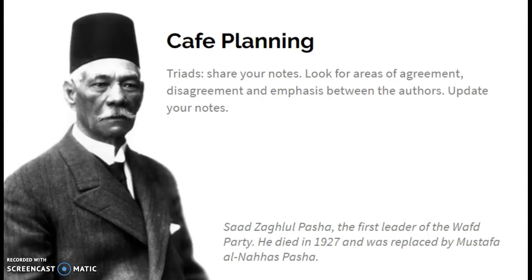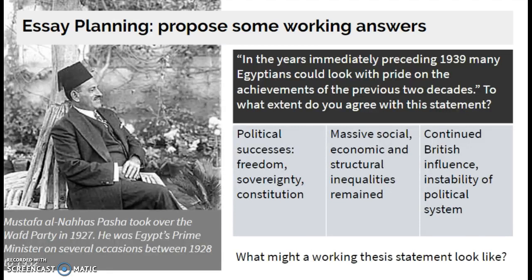It might be useful to do this with a friend — share your notes and look for areas of agreement and disagreement between historians, which helps build your argument and counter-argument. As you begin planning your essay, propose some working answers — leading ideas or topic sentences or a hypothesis. In terms of political success, the Egyptians achieved two major treaties and agreements with the British in 1922 and 1936, an Egyptian constitution was established, and political parties emerged — so overall I might give them a thumbs up there.